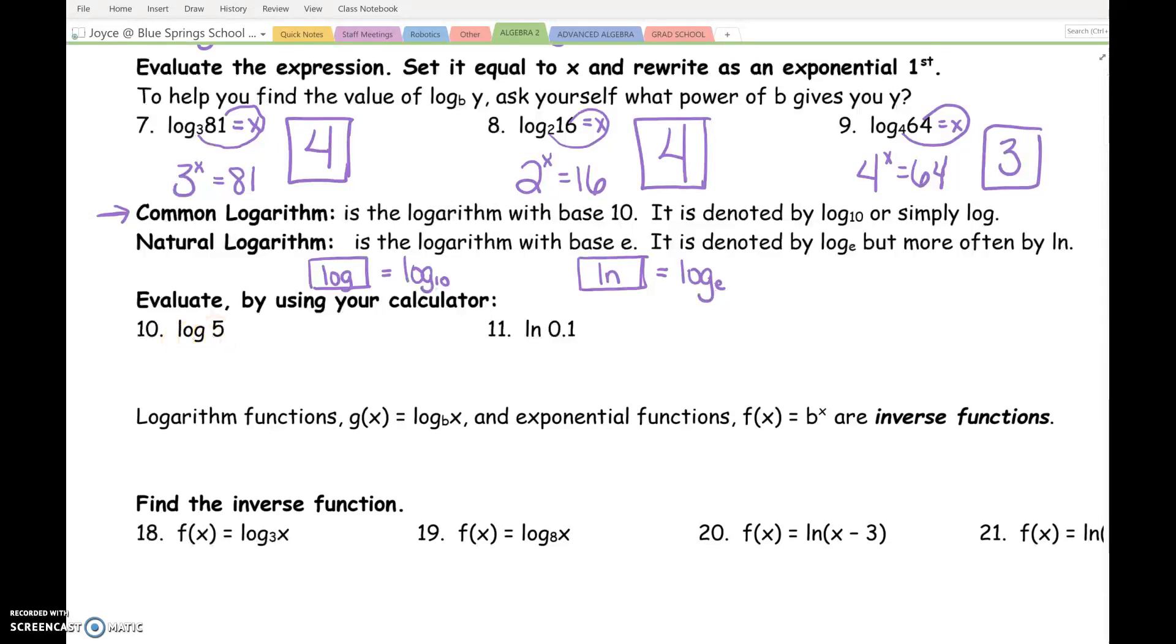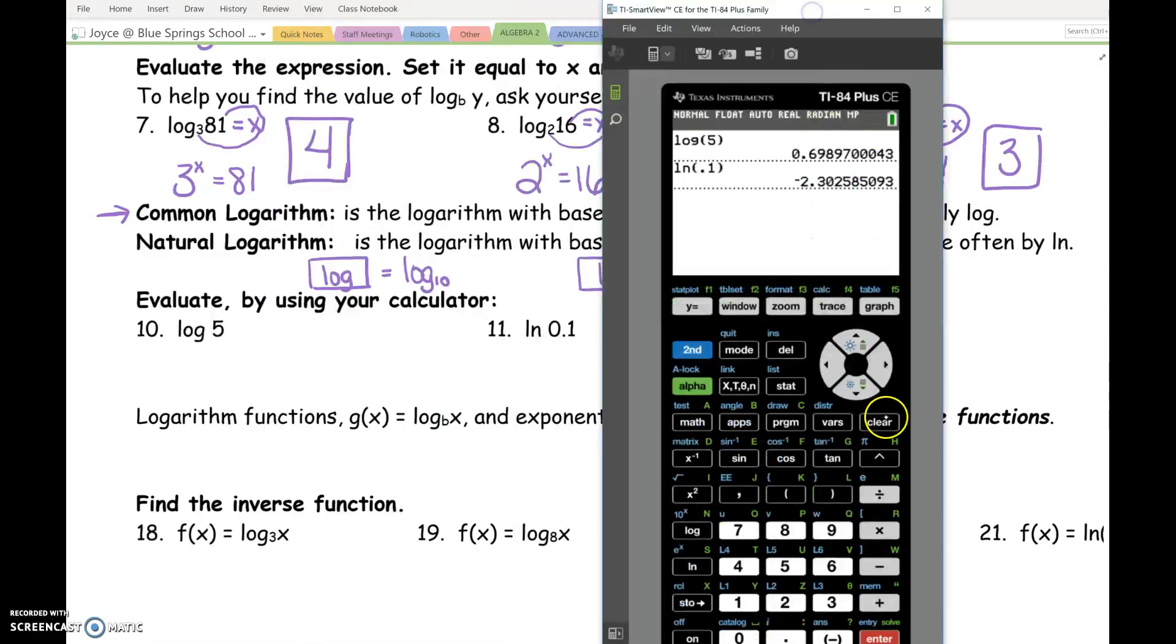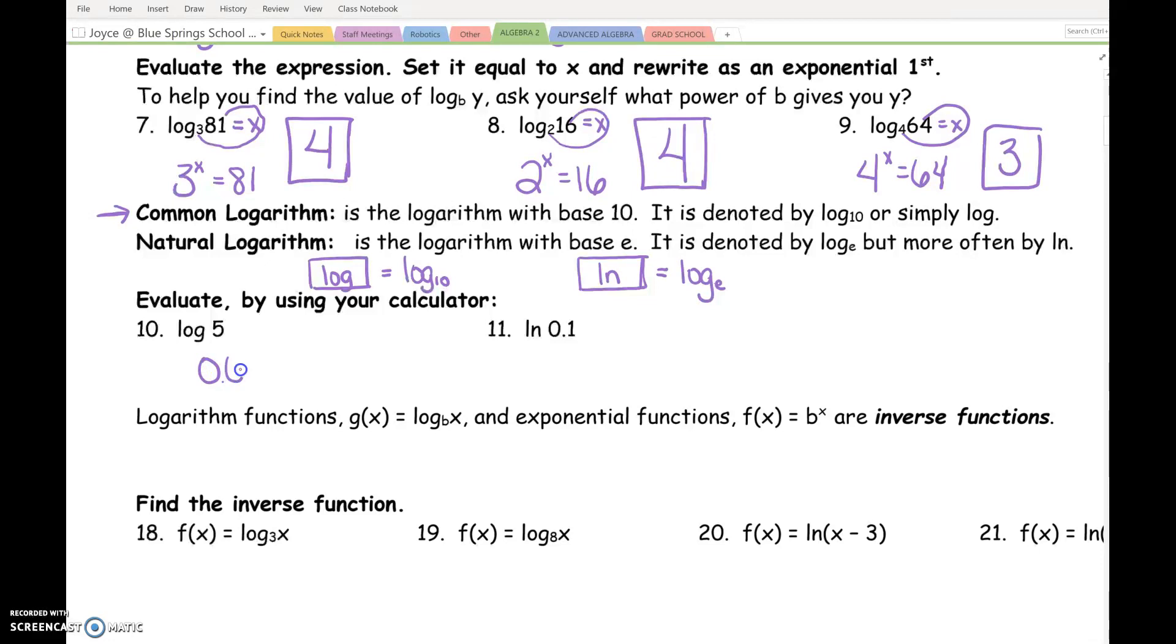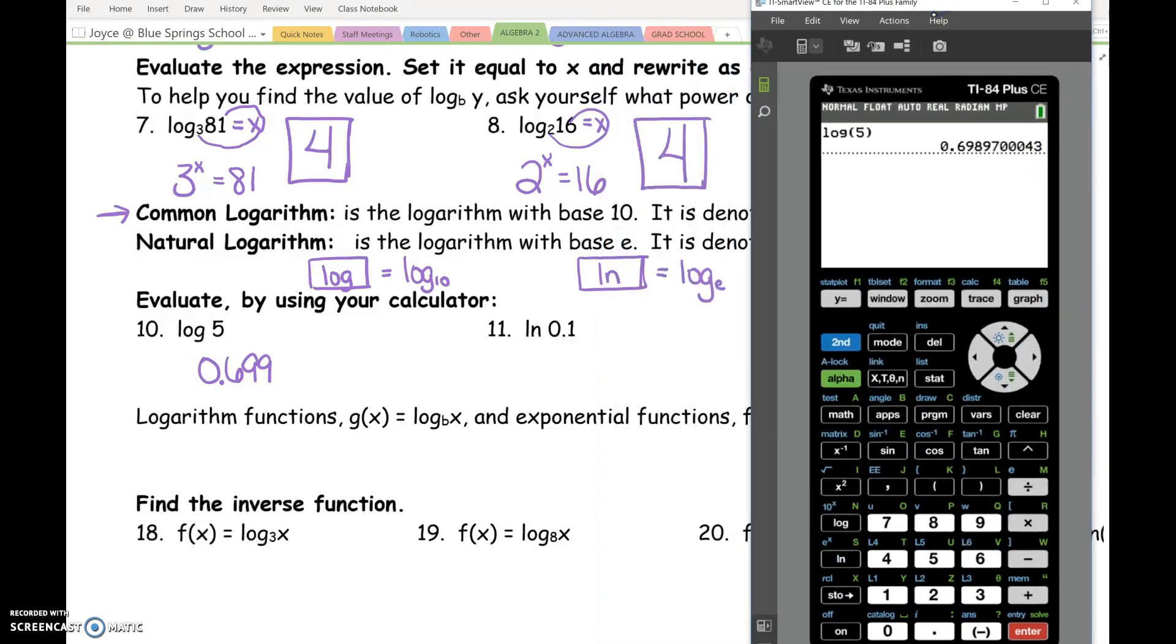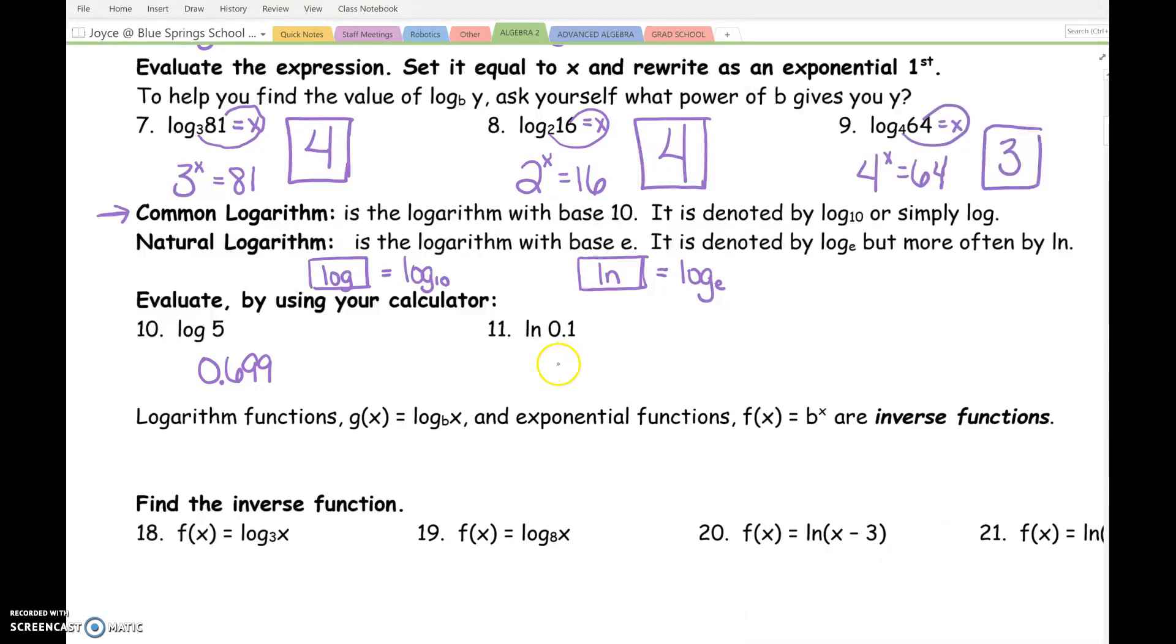To evaluate log of 5 in your calculator, you are going to take your calculator, type the log button, and 5. If you get 0.699, you did it correctly. Then try L-N of 0.1. If you get negative 2.303, you did that correctly.